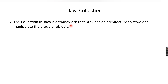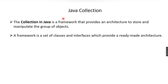Collections in Java is a framework that provides an architecture to store and manipulate the group of objects. A framework is a set of classes and interfaces which provides a ready-made architecture. The framework contains both classes and interfaces which are already developed, so we can make use of them directly in our code.